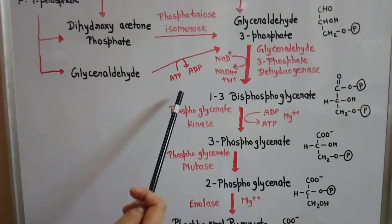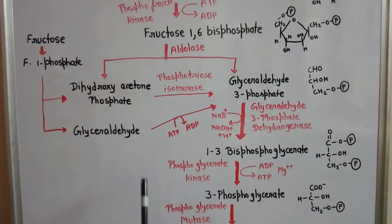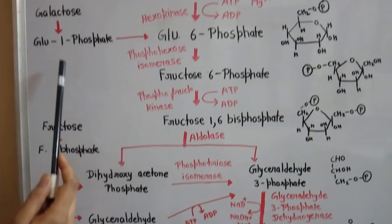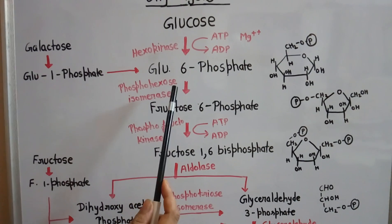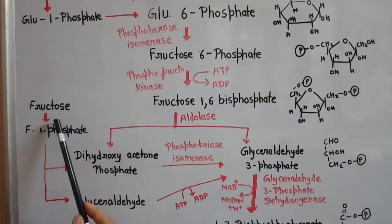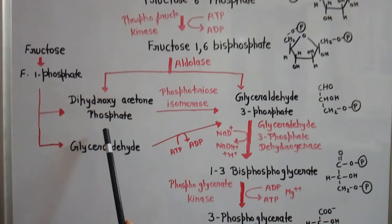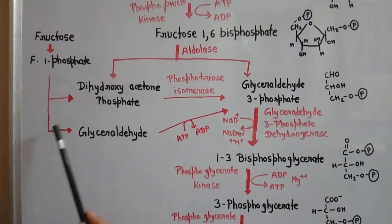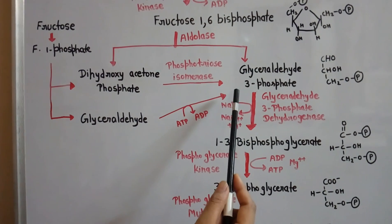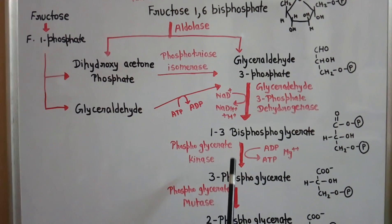Regarding the metabolism of other sugars: galactose is converted to glucose-1-phosphate, then to glucose-6-phosphate, which enters the glycolysis cycle. In the case of fructose, it is converted to fructose-1-phosphate, which may then convert to dihydroxyacetone phosphate and enter glycolysis, or it may be converted to glyceraldehyde, which is further converted to glyceraldehyde-3-phosphate and enters the glycolysis cycle.